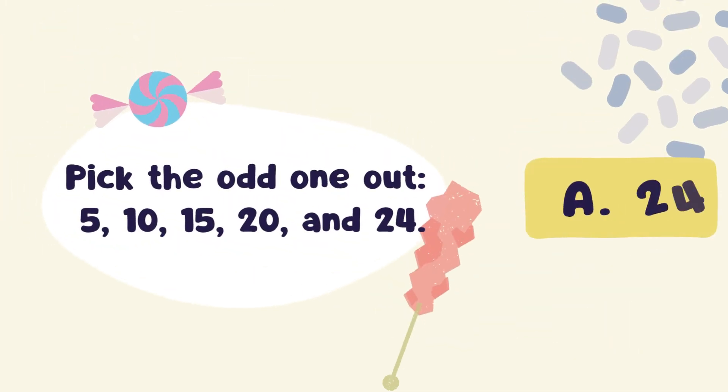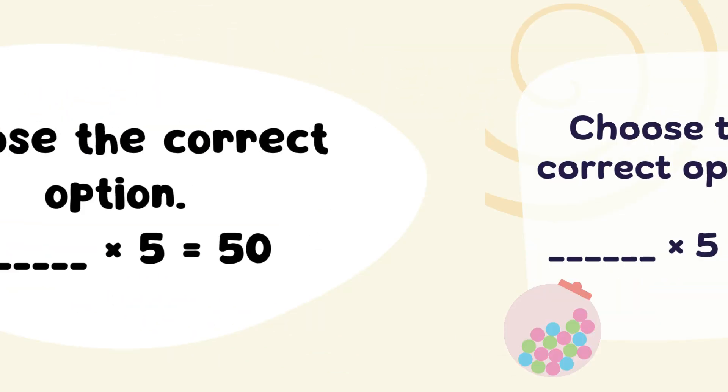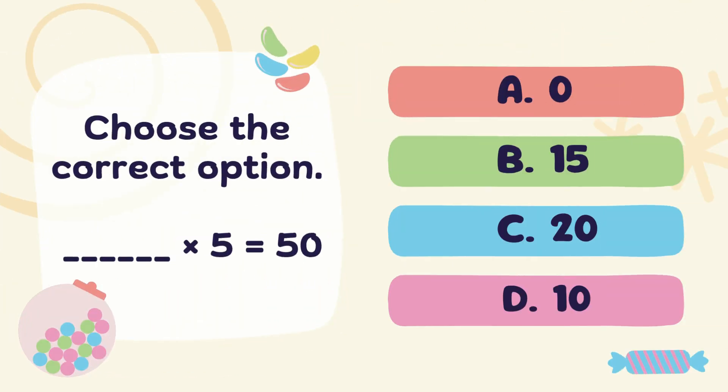Next Question: Pick the odd one out. Your right answer is Option A. 24. Next Question: Choose the correct option. ___ x 5 is equal to 50.